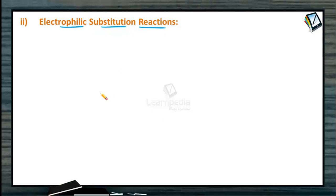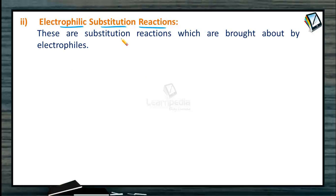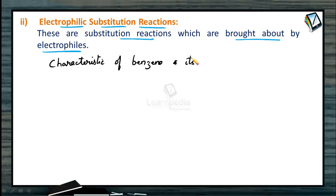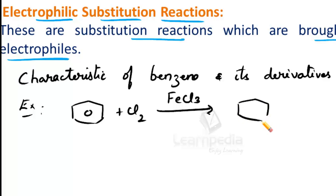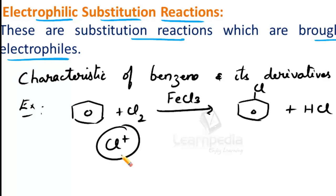From the heading itself it is clear that in electrophilic substitution reactions, an electrophile is involved. These are substitution reactions brought about by electrophiles, and they are characteristic of benzene and its derivatives. For example, when benzene reacts with chlorine in the presence of a Lewis acid like FeCl₃, one hydrogen is replaced by chlorine to give chlorobenzene, with HCl as a byproduct. The specific electrophile involved here is Cl⁺.